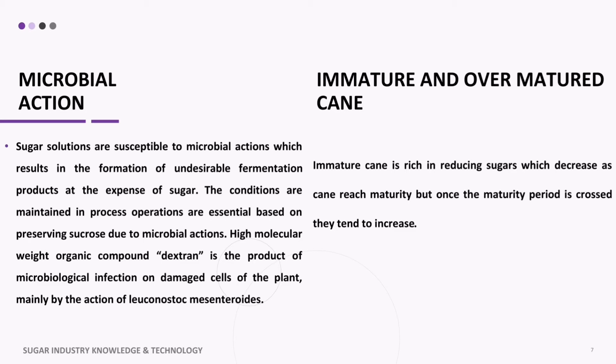Immature cane is rich in reducing sugars, which decrease as the cane reaches maturity. However, once the maturity period is crossed, reducing sugars tend to increase again.